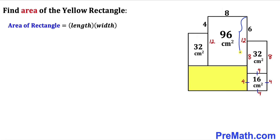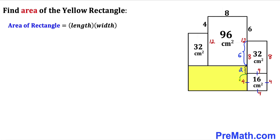We can see that this whole side length is 12 and this side length is 6, so therefore this side length is going to be 12 minus 6, which gives us 6. Now we know that this side length is 8, and 8 minus 6 gives us 2. We can see that this length is 4 units and this length is 2, so therefore this whole length is going to be 2 plus 4, which gives us 6. Therefore this side length of this yellow rectangle turns out to be 6 centimeter.